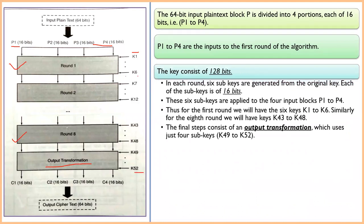Each round uses six subkeys, and each subkey is 16 bits in size. The six subkeys are applied together with the four input blocks P1 to P4. In the first round, keys K1 through K6 are used. In the last round, the final keys are used, and the output transformation step uses four subkeys.